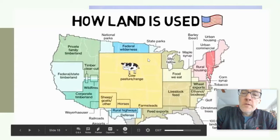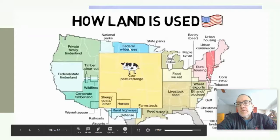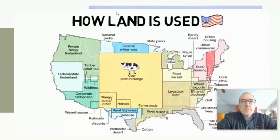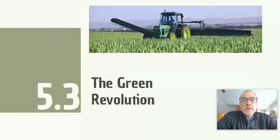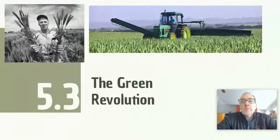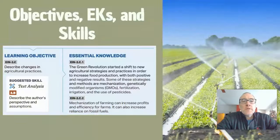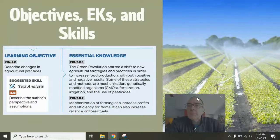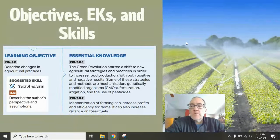Another thing you should have noticed when looking at the land use map was how much land we use to produce food — cow and pasture range land for animals, livestock feed — just the amount of land needed to feed our animals and grow food. That's the next topic: the green revolution, topic 5.3. We're going to look at many ways we have produced food in vast quantities in recent times. Our objective is to describe the changes in agricultural practices in the United States that have made us produce a lot of food much more efficiently, though also using more land.